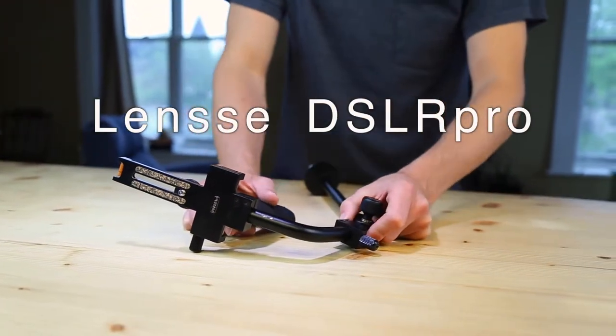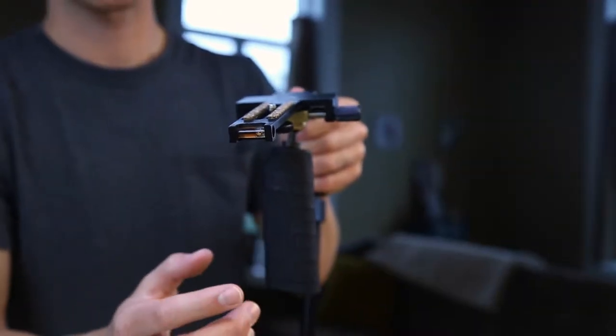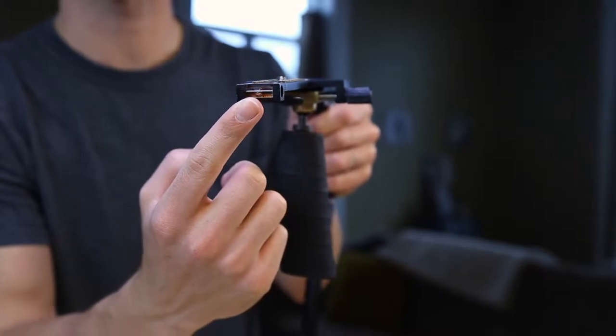This is the Lens DSLR Pro. It's going for a hundred bucks on Lens.com. Some nice things with the DSLR Pro is that there's a bubble level in the back for balancing left and right.